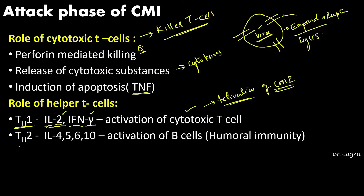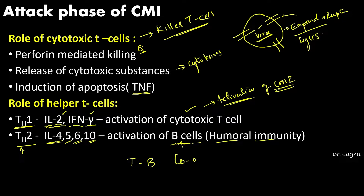Helper T-cell 2 secretes interleukin-4, 5, 6, and 10. This is very interesting because helper T-cell 2 causes activation of B-cells, which are involved in humoral immunity. So the helper T-cells, which are part of cell-mediated immunity, are also activating antibody-mediated immunity by stimulating B-cells. This interaction is called TB cooperation.